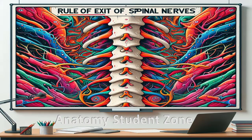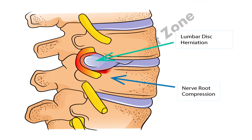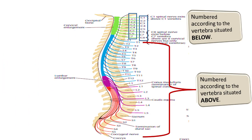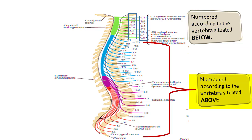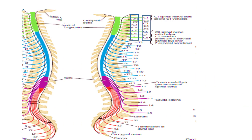This is clinically important because if there is a compression at the level of an intervertebral disc, we need to know which spinal nerve will be involved and which part of the body it is going to affect. The numbering of cervical spinal nerves and the rest of the spinal nerves is different. Cervical spinal nerves are numbered according to the vertebra located below, while all the rest are numbered according to the vertebra situated above.